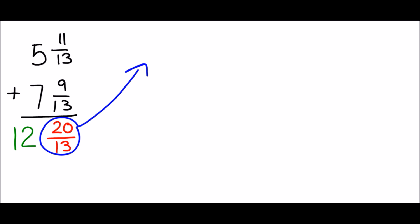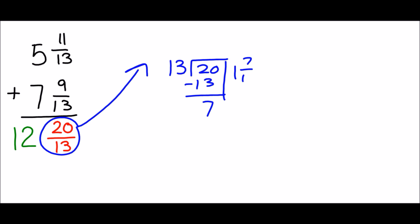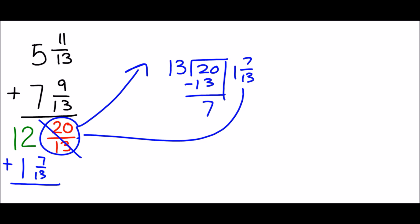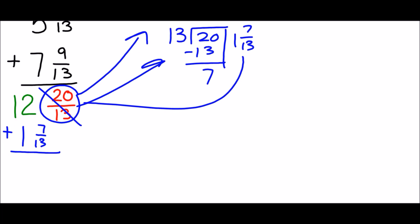We regroup twenty-thirteenths into a whole number and a fraction by dividing thirteen into twenty. Thirteen goes into twenty once; one times thirteen is thirteen. Subtract, and we have seven left over — that's seven-thirteenths. So twenty-thirteenths becomes one and seven-thirteenths. We replace the twenty-thirteenths: seven-thirteenths plus nothing is seven-thirteenths.